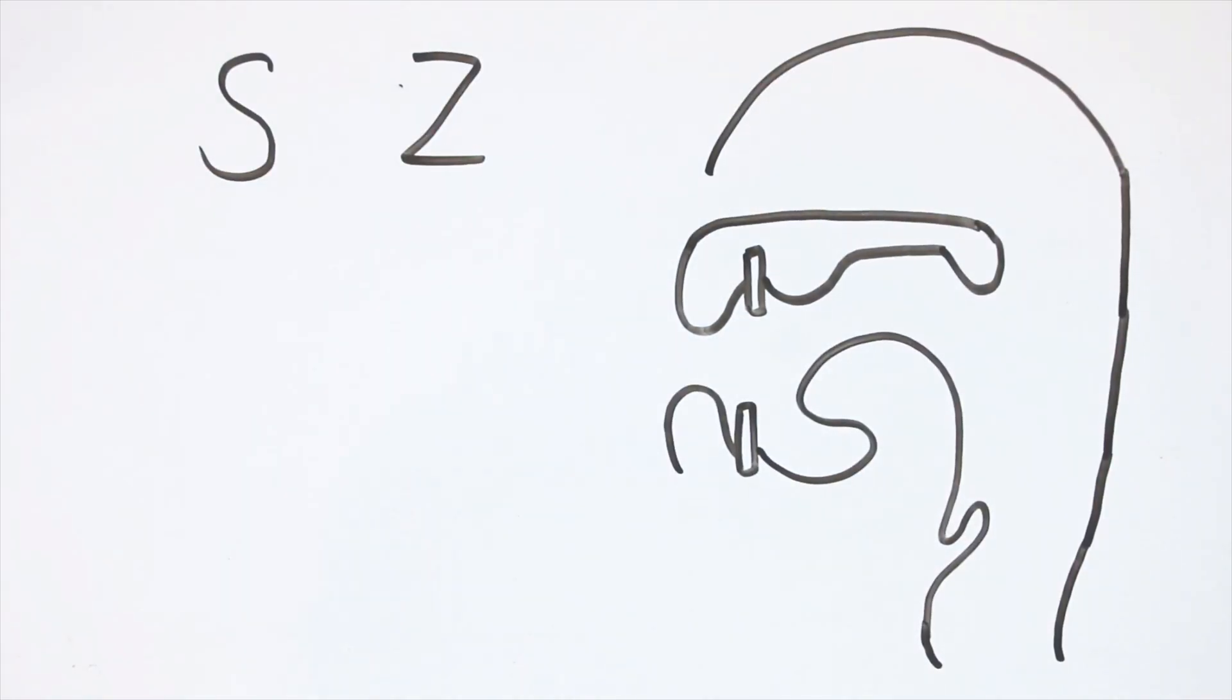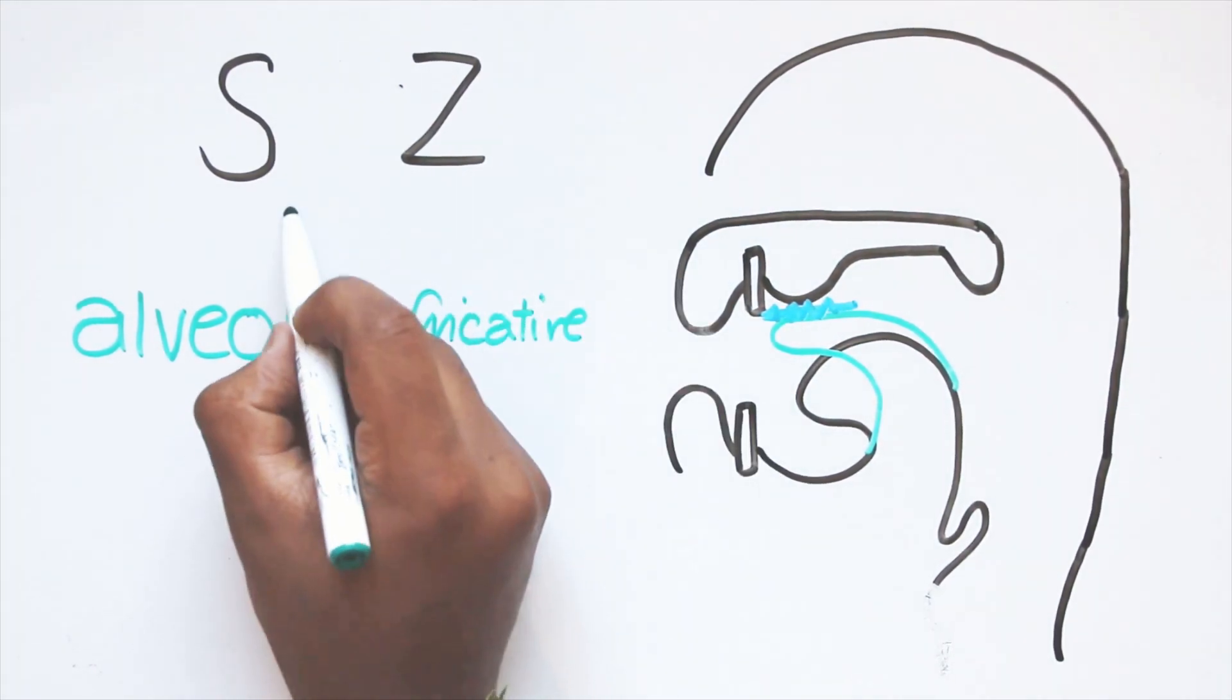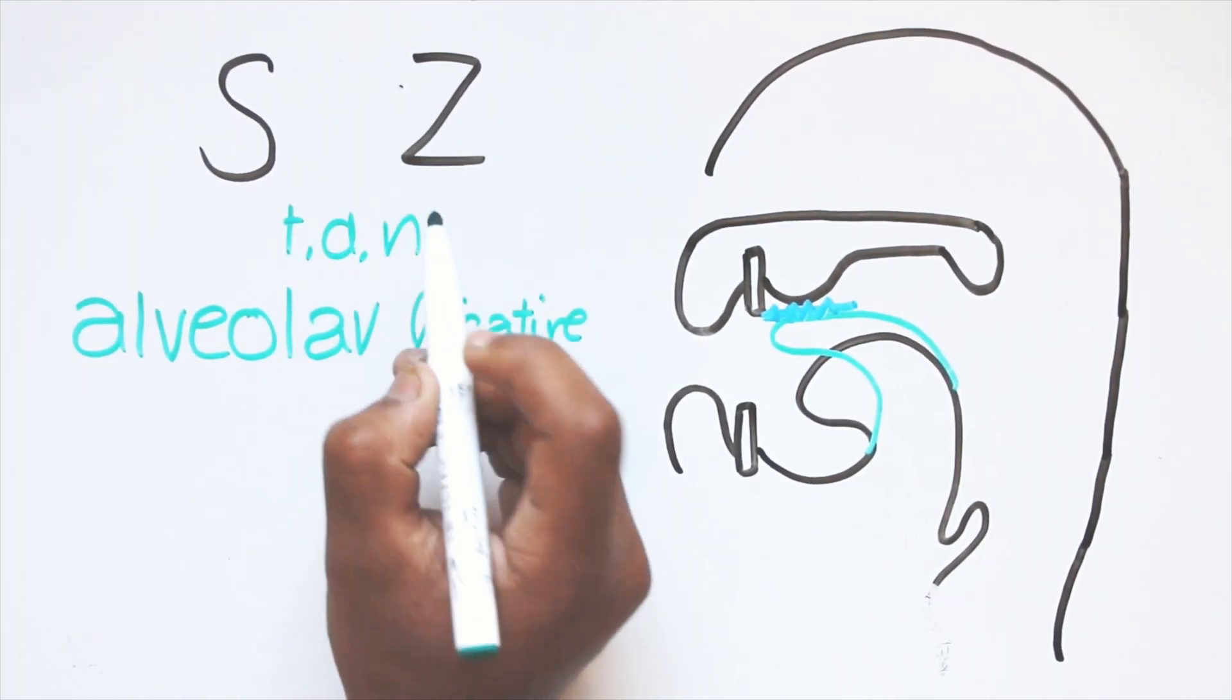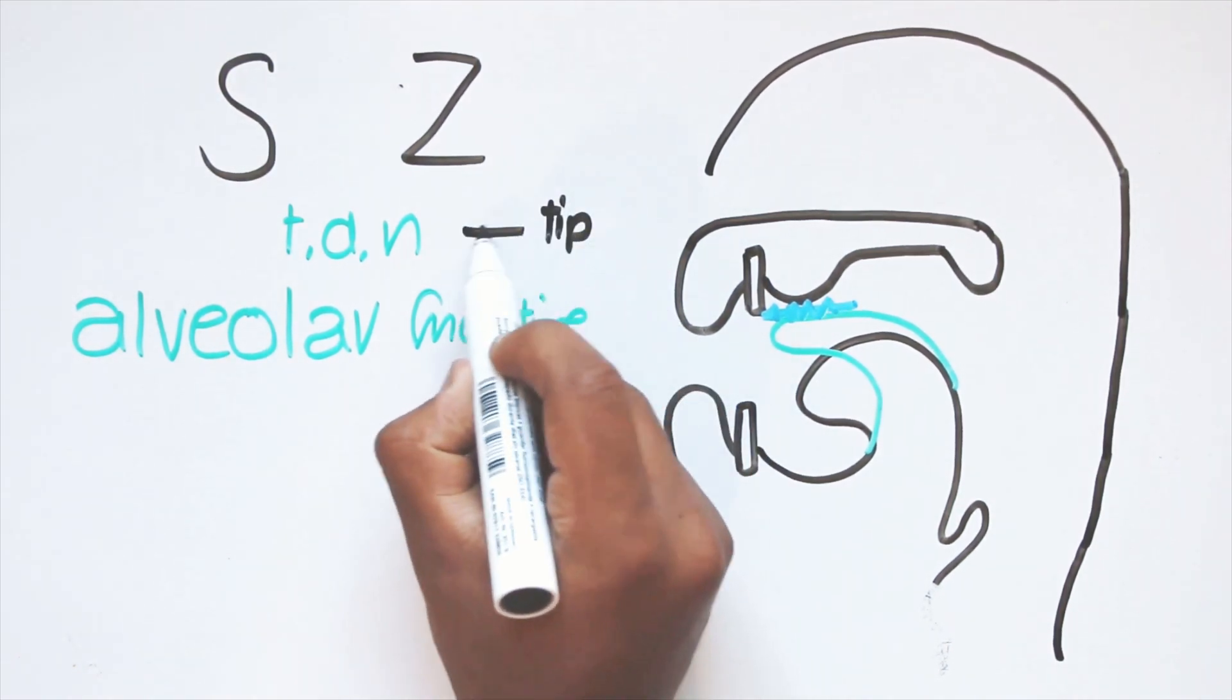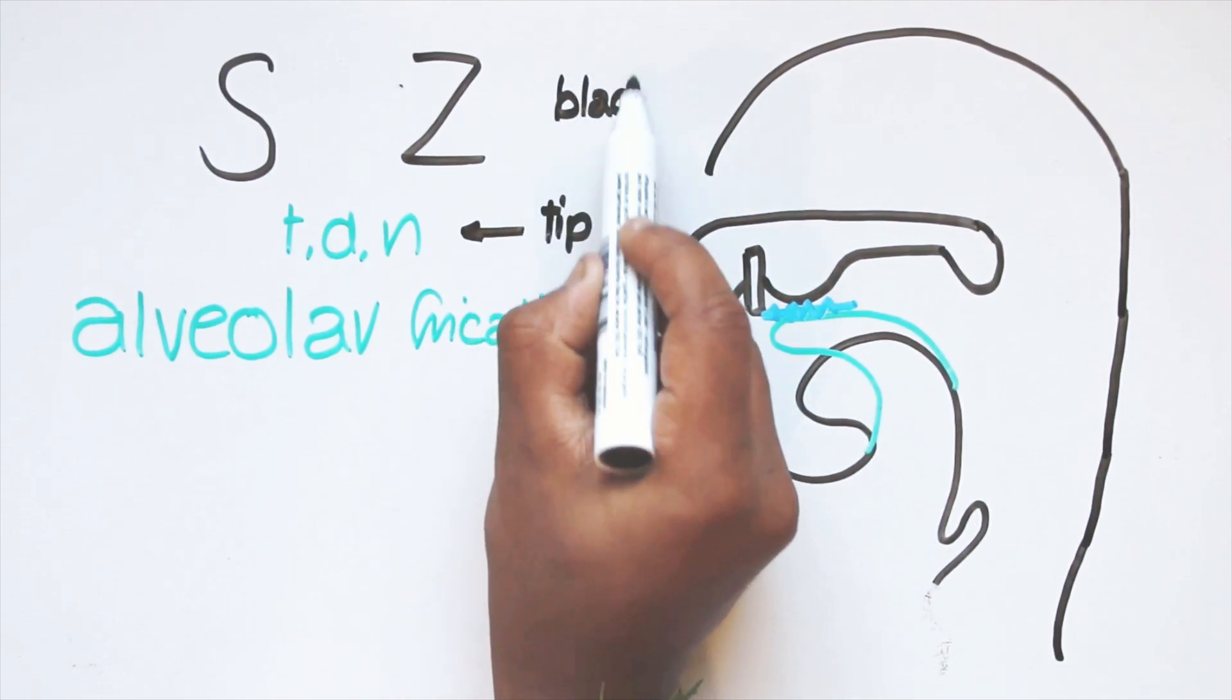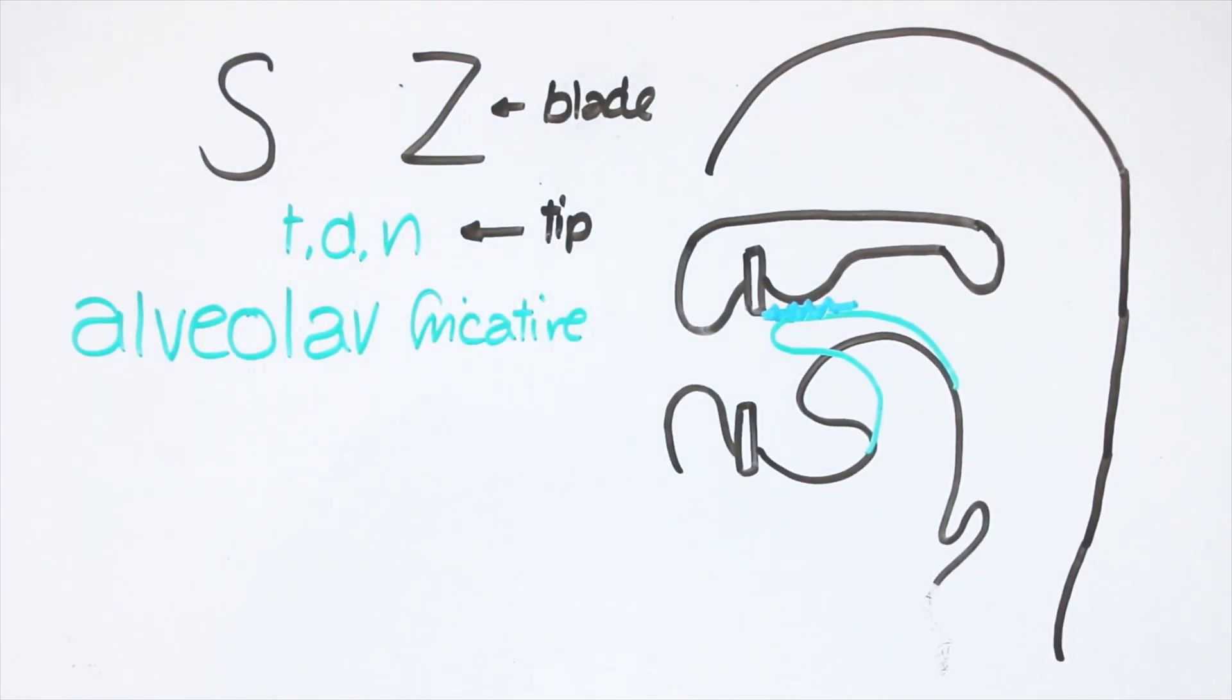s and z are simple, since they are simply alveolar fricatives, with the same point of articulation as t, d and n. One thing to point out here is that while t, d and n use the tip of the tongue, s and z use the blade of the tongue, making them sound sibilant.